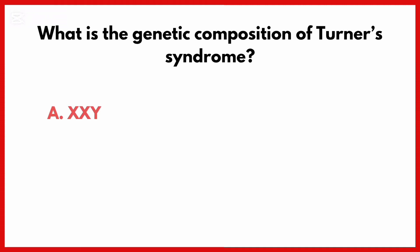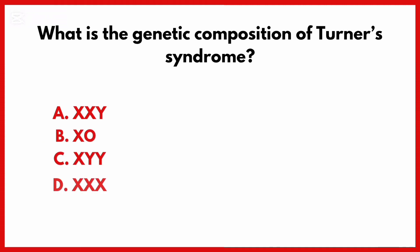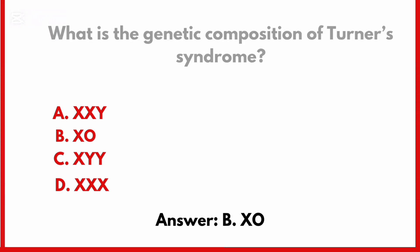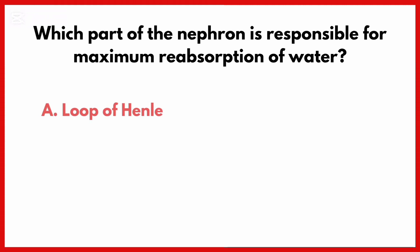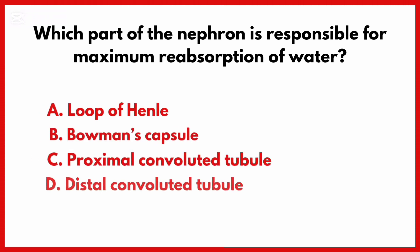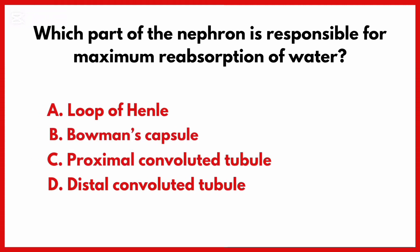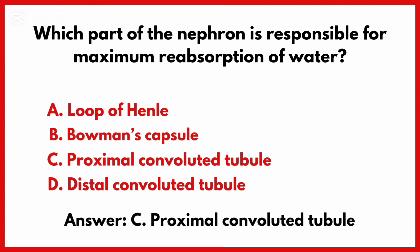What is the genetic composition of Turner syndrome? Correct answer is option B. Which part of the nephron is responsible for maximum reabsorption of water? Correct answer is option C: Proximal convoluted tubule.